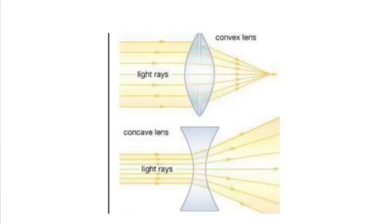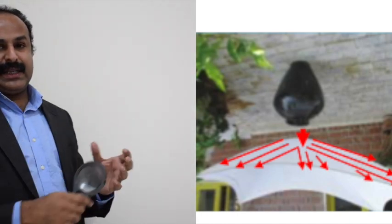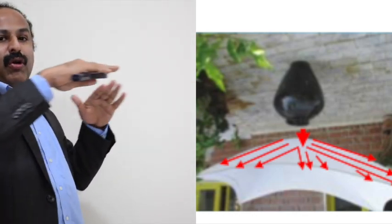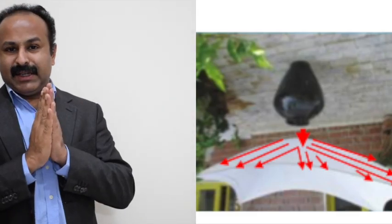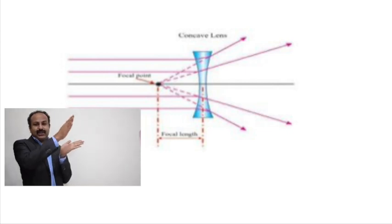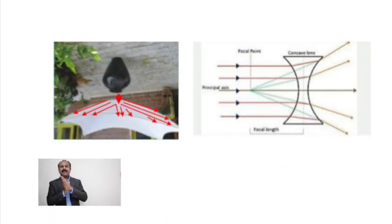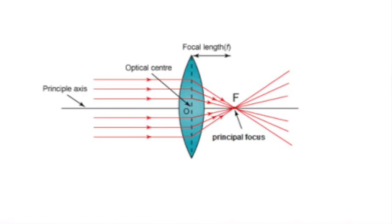A concave lens is also called a diverging lens, while a convex lens is called a converging lens. Consider the opposite diagram: water poured from a jar into a diverging shape spreads out in all directions. Similarly, when a parallel beam of light passes through a concave lens, after refraction the light diverges. You can compare the similarity between the diverging water and the diverging parallel beam of light passing through a concave lens.